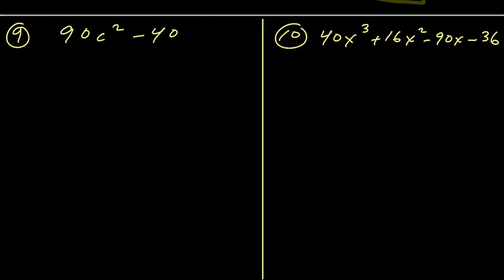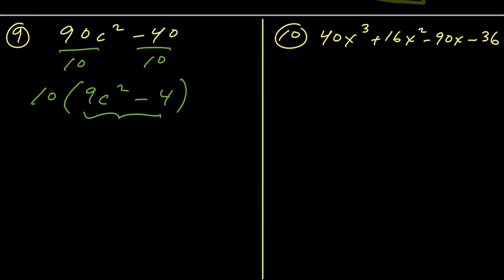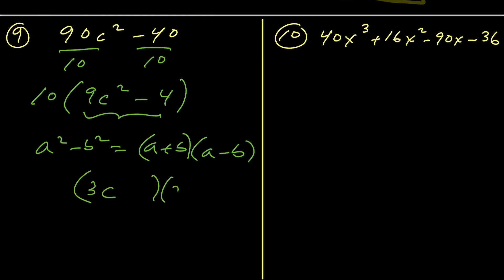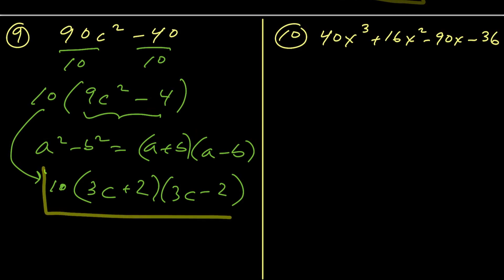For number 9, we have two terms. First check for a GCF — both terms are divisible by 10, so we factor out 10, leaving 9c² minus 4. That's a difference of two squares. Using the formula (a + b)(a − b): the square root of 9c² is 3c, and the square root of 4 is 2. So we get 10(3c + 2)(3c − 2). Don't forget to bring down that GCF. Always check if you can factor further — sometimes you factor 2, 3, 4, or 5 times.